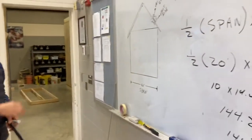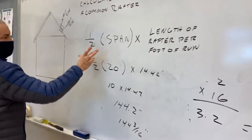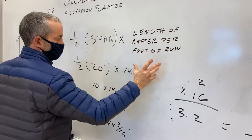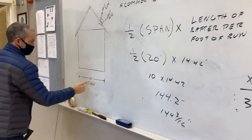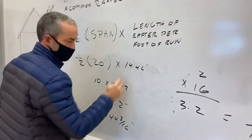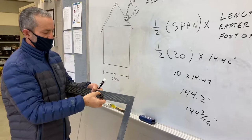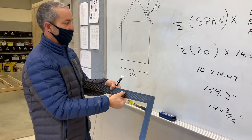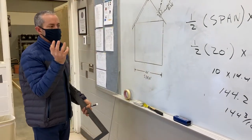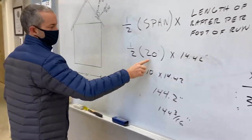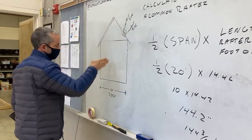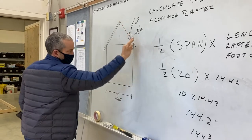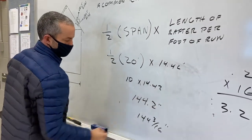So let's plug this into our formula. We have one-half the span times the length of rafter per foot of run. So it's one-half times 20, which is our span, times 14.42, which is the number that we got off the framing square underneath the number eight. So now it's just a matter of doing simple math. One-half times 20 is 10, right? 20 divided by 2 is 10. That's the middle of our building. And we'll find the middle of our building so that we can calculate the length of this rafter, times 14.42.